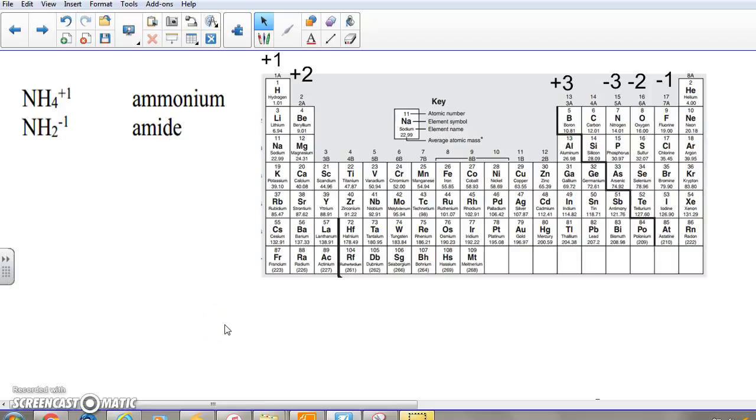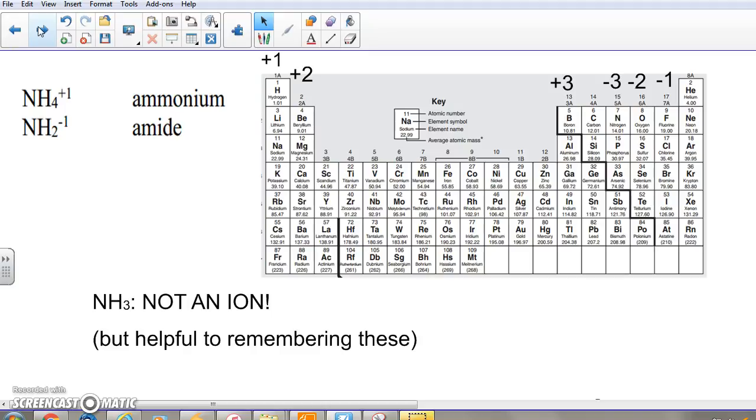Ion quiz number 11 only has two new ions on it, so it shouldn't be too terribly difficult, but it centers around ions containing both nitrogen and hydrogen. The key to understanding these is to know a little bit about NH3.